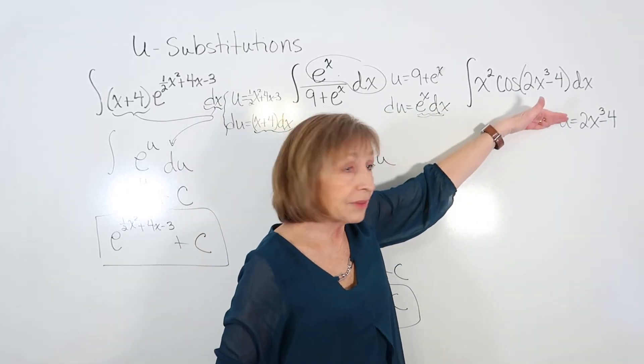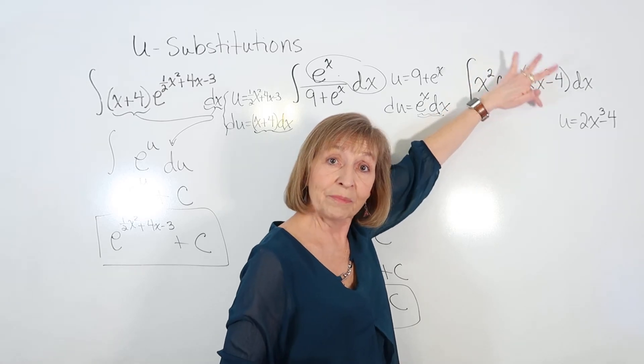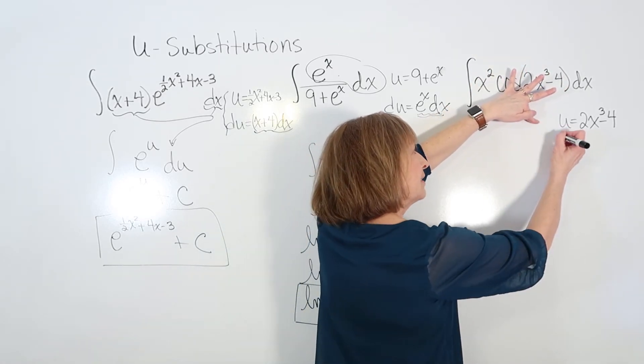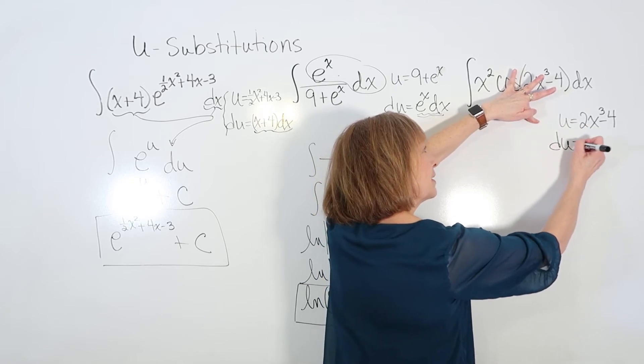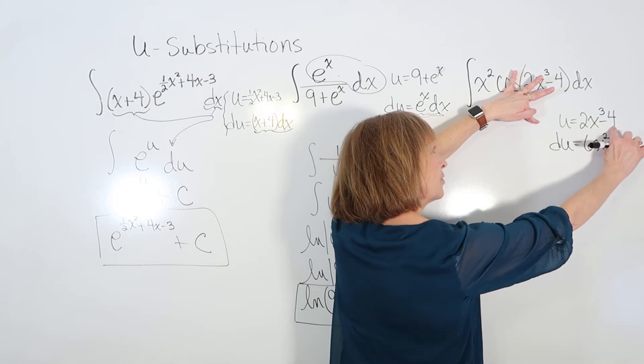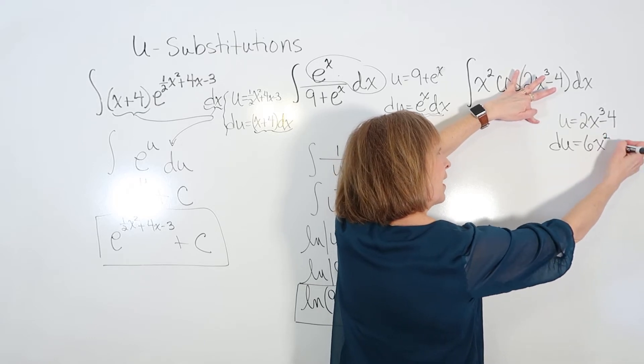Now figure out the differential over here. Don't look up there. Just look at what you assigned your u to represent. And the differential du is going to be 6x², the derivative of negative 4 is 0, and then dx.